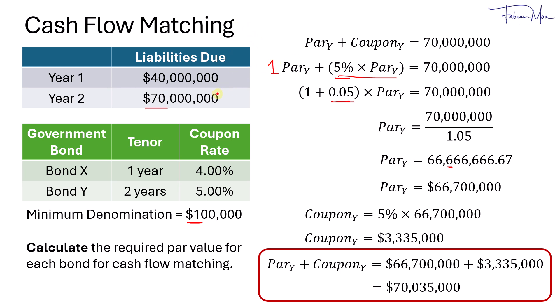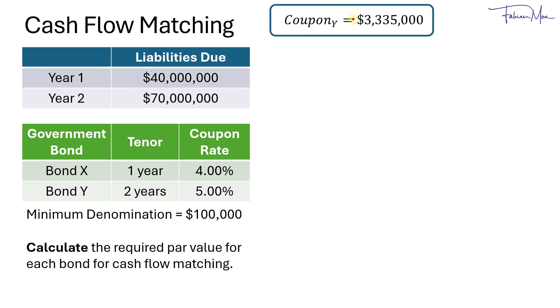Next, we will match the cash flow for year 1 using bond X. We'll need the coupon for bond Y because bond Y has a tenor of 2 years. So there will be coupons in year 1 and year 2. So to match the cash flow, we would take the par value of bond X plus the coupon of bond X, which is both in year 1, and there's also the coupon of bond Y in year 1. And the total cash flow would be equal to 40 million, which is the liability due in year 1.